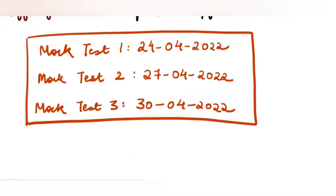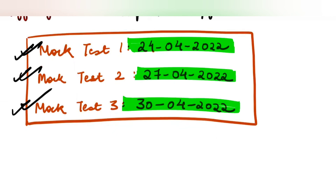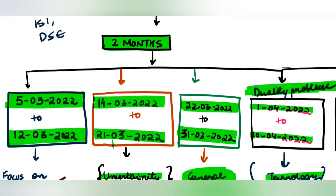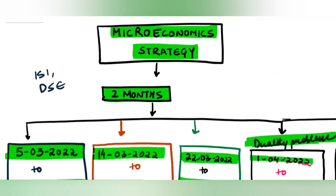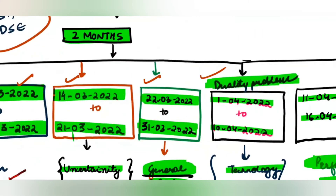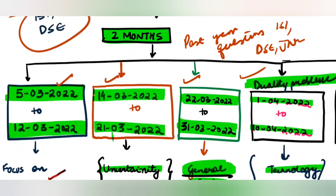Followed by this, we'll have three mock tests for complete microeconomics: one on 24th of April, a second on 27th of April, and a third on 30th of April. This would be a full-fledged 100-mark microeconomics paper covering all six modules. This is the plan you should follow for microeconomics, specifically for entrance exams like ISI, DSE, etc. In all these modules, we will also do all the past year questions of ISI, DSE, JNU, JAMIA, etc. Thank you.